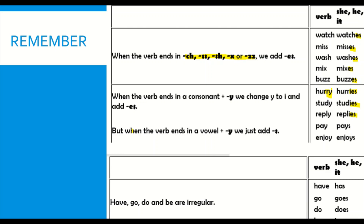The third and last case is when we have two vowels before the Y — in this case we just add S at the end. For example: pay becomes pays, enjoy becomes enjoys, play becomes plays. So these are the three cases to remember when using the third person with verbs: we use ES, IES, or S at the end.